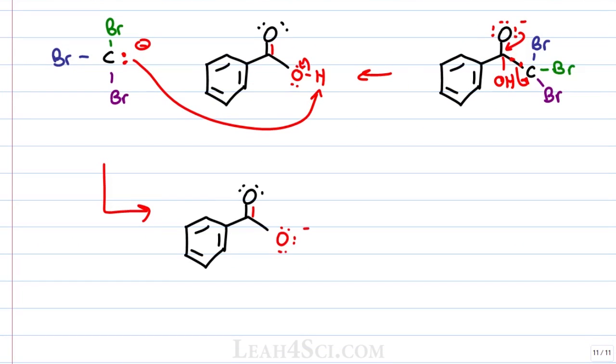This gives me a negative carboxylate which we pair with any of the Na pluses floating around in solution and of course the haloform which in this case is CBr3 bound to an H. If you're looking for a carboxylic acid as your final product, simply react the carboxylate with acid and that will protonate the negative oxygen.